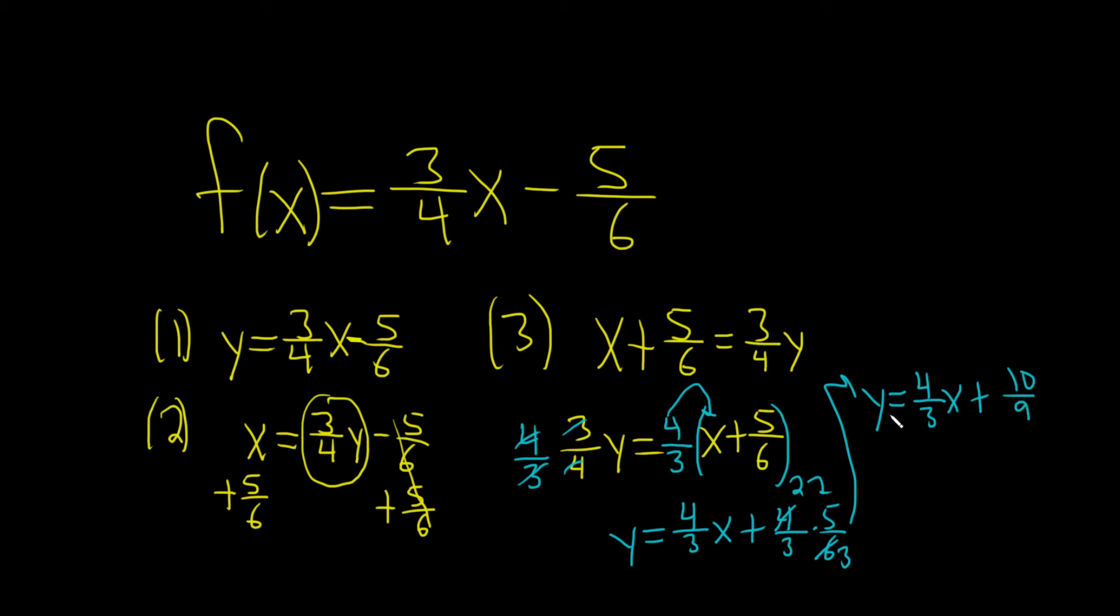And the very last step would be to write our answer using the correct notation. So that would be f inverse of x, and that's equal to 4 thirds x plus 10 over 9. And that would be the final answer to this problem.